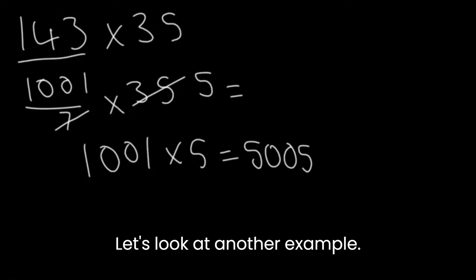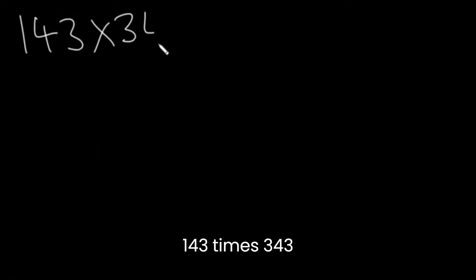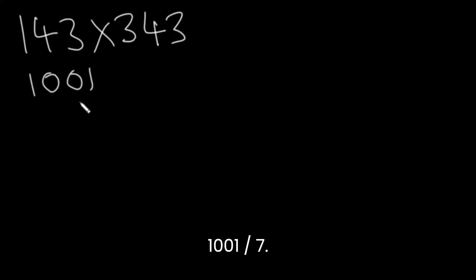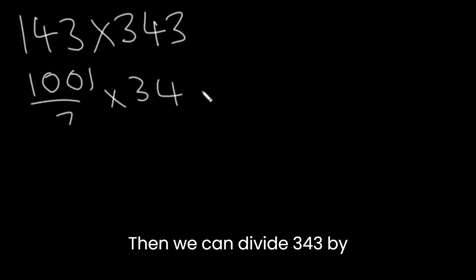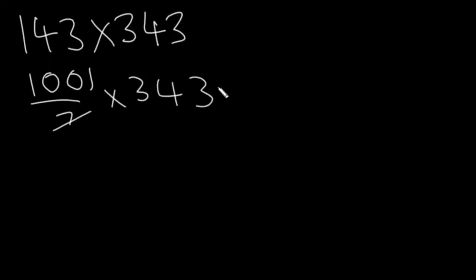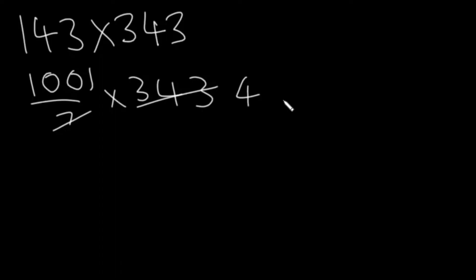Let's look at another example. Let's say we have 143 times 343. Again, we replace 143 with 1001 over 7. Then we can divide 343 by 7. This will give us 49.